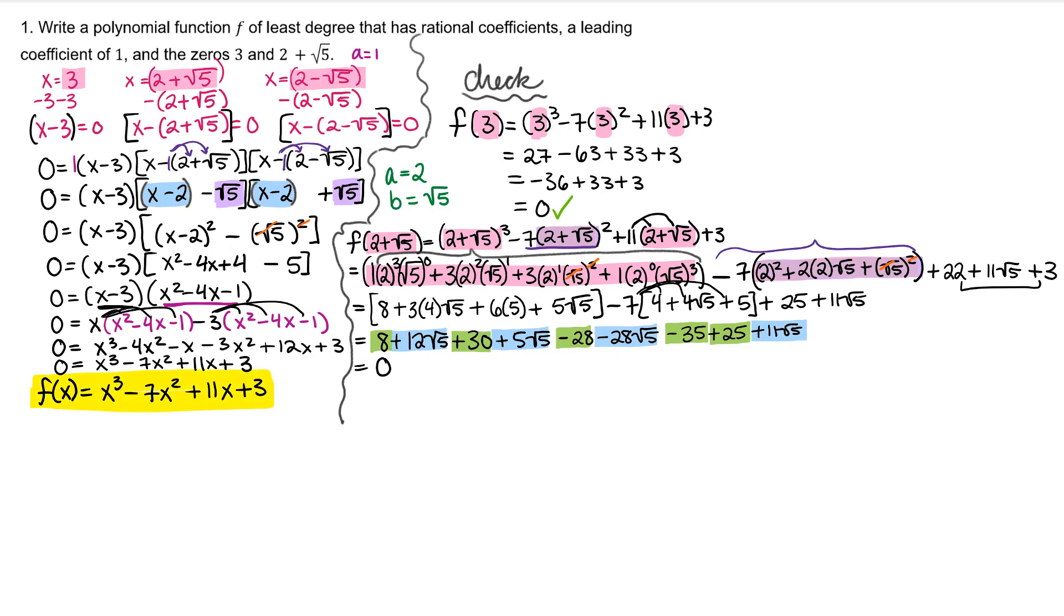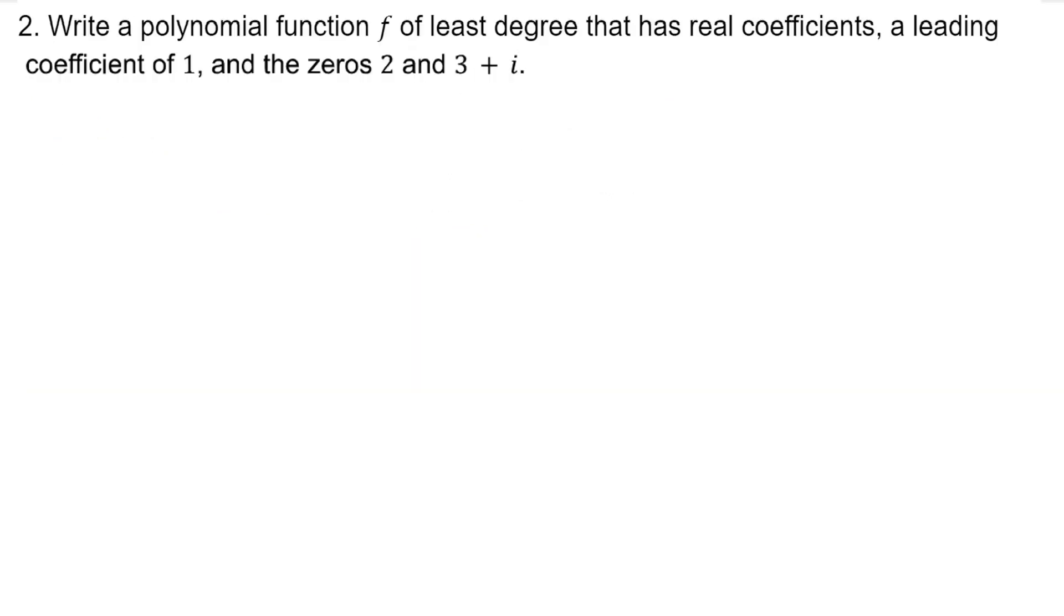But now we know for sure that this is our solution. For number 2, write a polynomial function f of least degree that has real coefficients, a leading coefficient of 1, and the zeros 2 and 3 plus i.